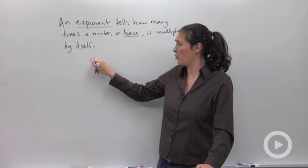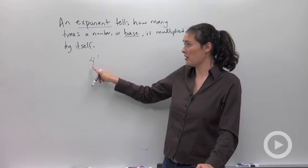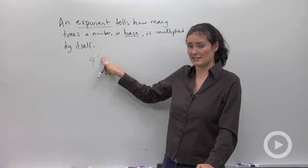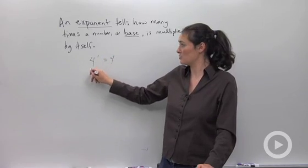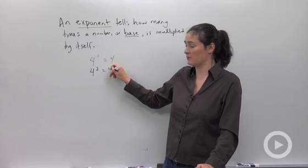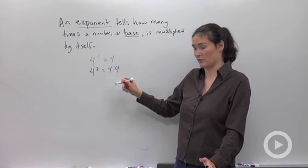Like if I have 4 to the first power, 4 is the base, 1 is the exponent. That means 4 times itself one time. You could also write 4 squared, which means 4 times itself twice, or 4 times 4.